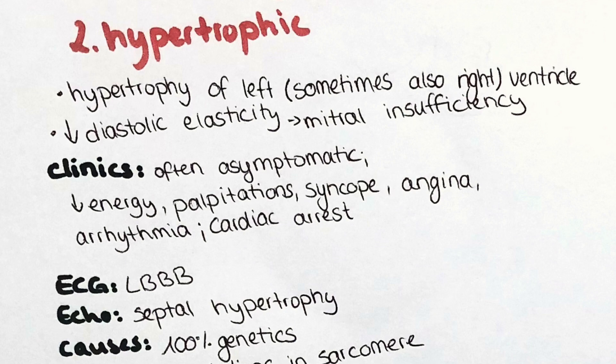Patients might have a decrease in energy, palpitations, syncopes, angina pectoris, arrhythmias, and even sudden cardiac arrest. Hypertrophic cardiomyopathy is actually the leading cause of sudden death in adolescents and adult athletes.